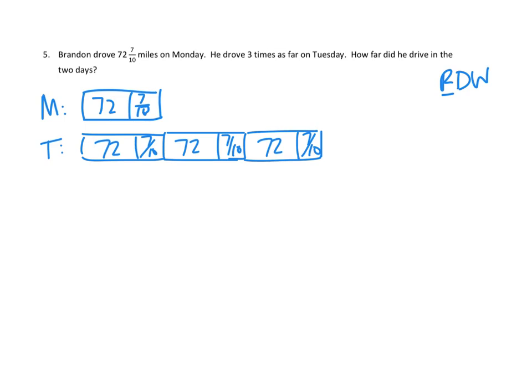And then what's the question they're asking? How far did he drive in the two days? Oh, so this is one of those total questions. They want to know everything. They want to know everything on both days. How far did he drive in the two days? And that tells me that I'm going to need to multiply 72 and 7 tenths times 1, 2, 3, 4. Because one of those distances he drove on Monday and three times as many of them, three more of them, he drove on Tuesday. So he drove 1, 2, 3, 4 of those in all. So I know I'm going to need to go 4 times 72 and 7 tenths.